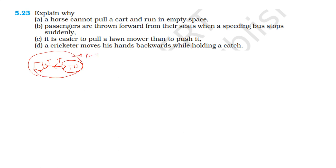In empty space, there is no external force acting on the system. The total force on the system is zero. Therefore, the horse cannot pull the cart and run in empty space. On the ground, the horse pushes backward against the ground, and the ground exerts a forward reaction force.